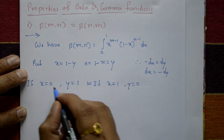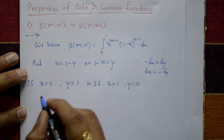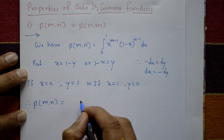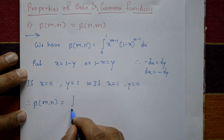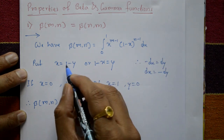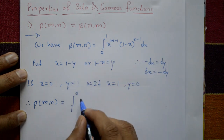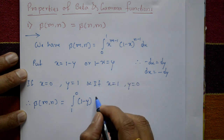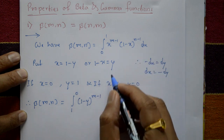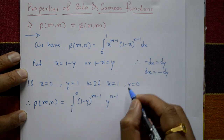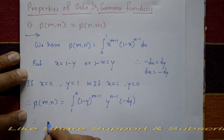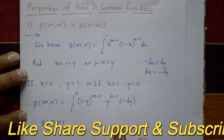Using these results in the equation, beta of m,n equals integration from 1 to 0, where x equals 1 minus y, so we get 1 minus y raised to m minus 1, and 1 minus x equals y, so y raised to n minus 1, and dx equals minus dy.